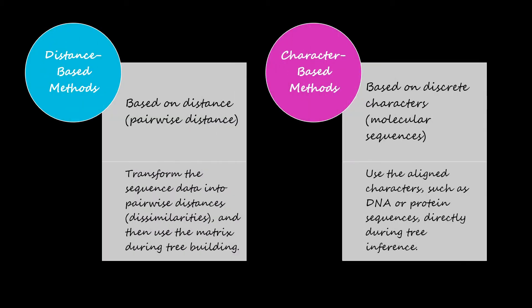Distance-based methods are based on pairwise distances, whereas character-based methods are based on discrete characters, i.e., molecular sequences. Distance-based methods transform the sequence data into pairwise distances or dissimilarities and then use that matrix during tree building. Character-based methods use the aligned characters such as DNA or protein sequences directly during tree inference. One drawback of distance-based methods is that they usually lead to loss of sequence information.